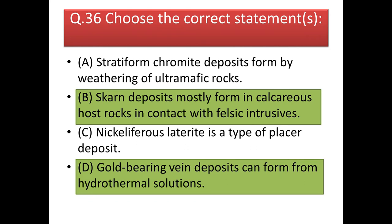Next question: choose the correct statement. Stratiform chromite deposits are formed by the weathering of ultramafic rocks — it is true that stratiform chromite deposits are associated with ultramafic rocks, but the process of formation is igneous, not weathering. Skarn deposits mostly form in calcareous host rocks in contact with felsic intrusive — this is correct. Nickeliferous laterite is a type of placer deposit — not correct, because nickeliferous laterites are formed by the weathering of olivine-rich ultramafic rocks. Gold-bearing vein deposits can form from hydrothermal solutions — correct.